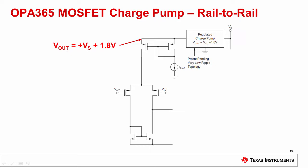Here we show a simplified representation of the charge pump used in the OPA365. In this case, the charge pump boosts the supply voltage by 1.8 volts while not needing to supply much current. This is enough to overcome the VSAT plus VGS positive rail limitation on the P channel input pair.